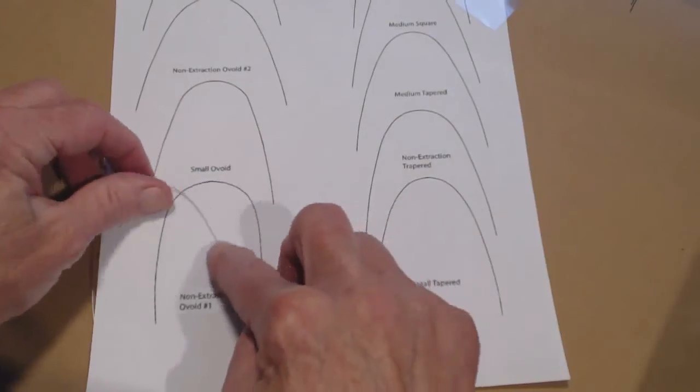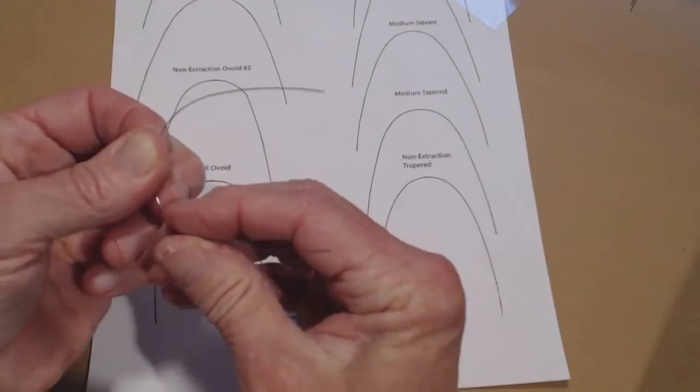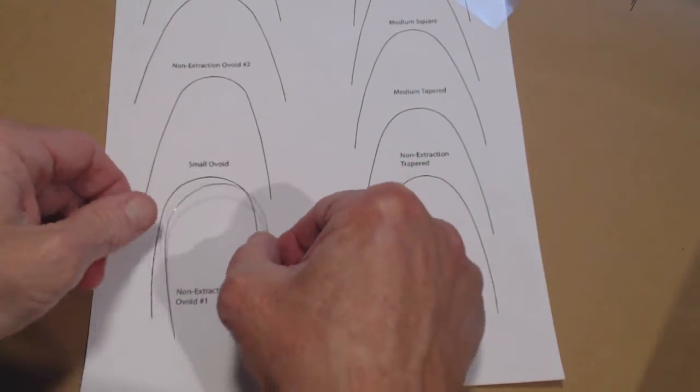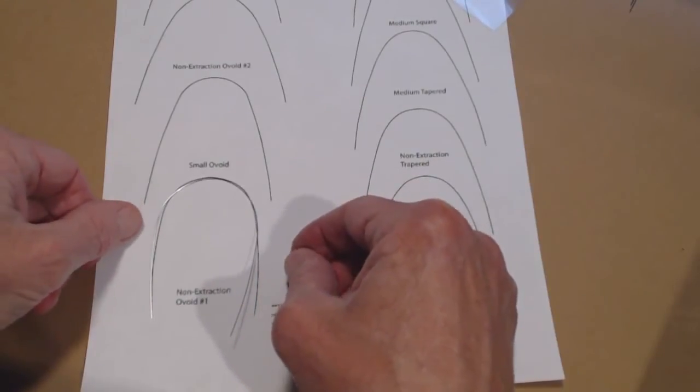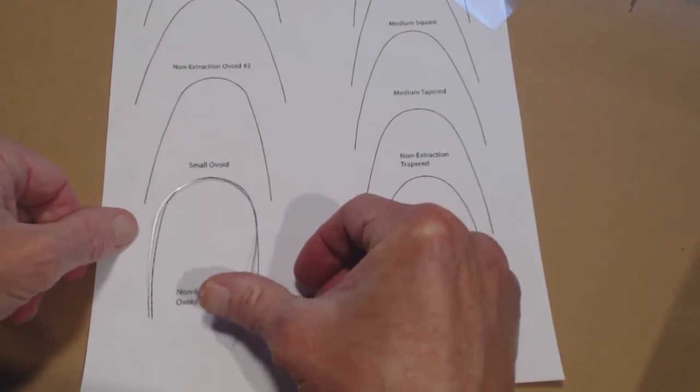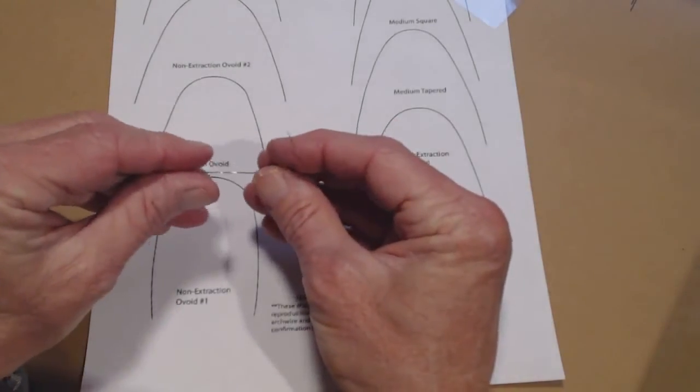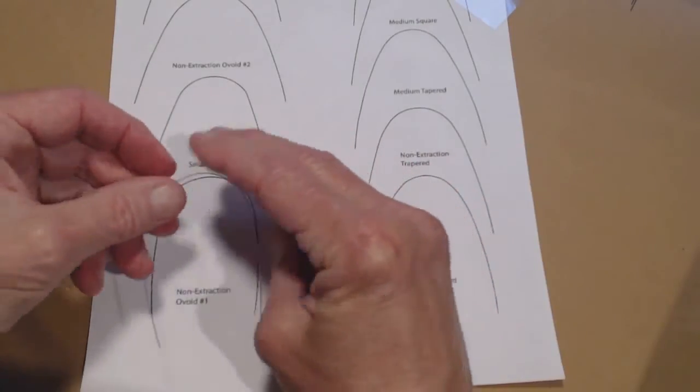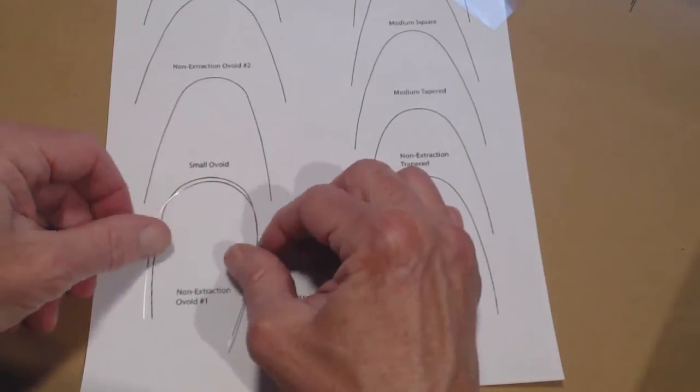Now I have to make that get tighter toward the back. Using my thumb and forefinger, I can make it get tighter toward the back. Can you see how it's got a little bit of potato chip in here? That's what I call it when the wire's not straight. That's a super easy fix. You just take the twist out like that and then lay it back flat on the tabletop.